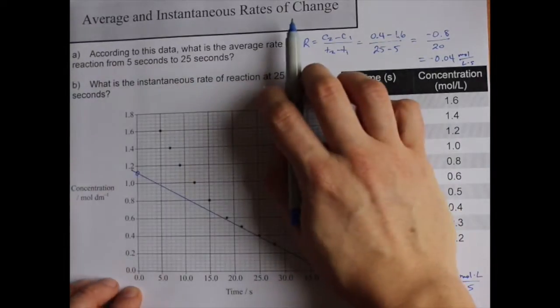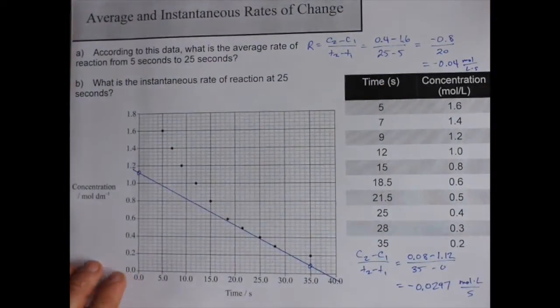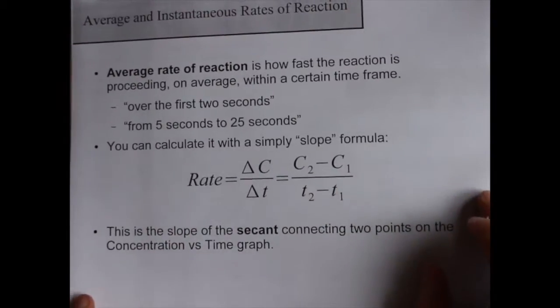Again, average rates of change are the slopes of the secants. And instantaneous rates of change are the slopes of the tangents.